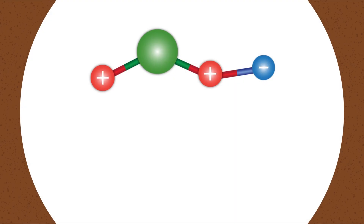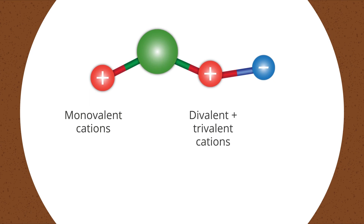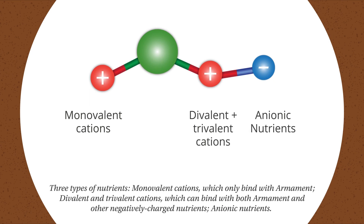There are three categories of nutrients in the soil: monovalent cations and divalent and trivalent cations, which have positive charges, and anions that bind with divalent or trivalent cations. Monovalent cations have one available charge and only bind with armament. Divalent and trivalent cations have multiple charges, allowing them to simultaneously bind with both armament and anionic nutrients.